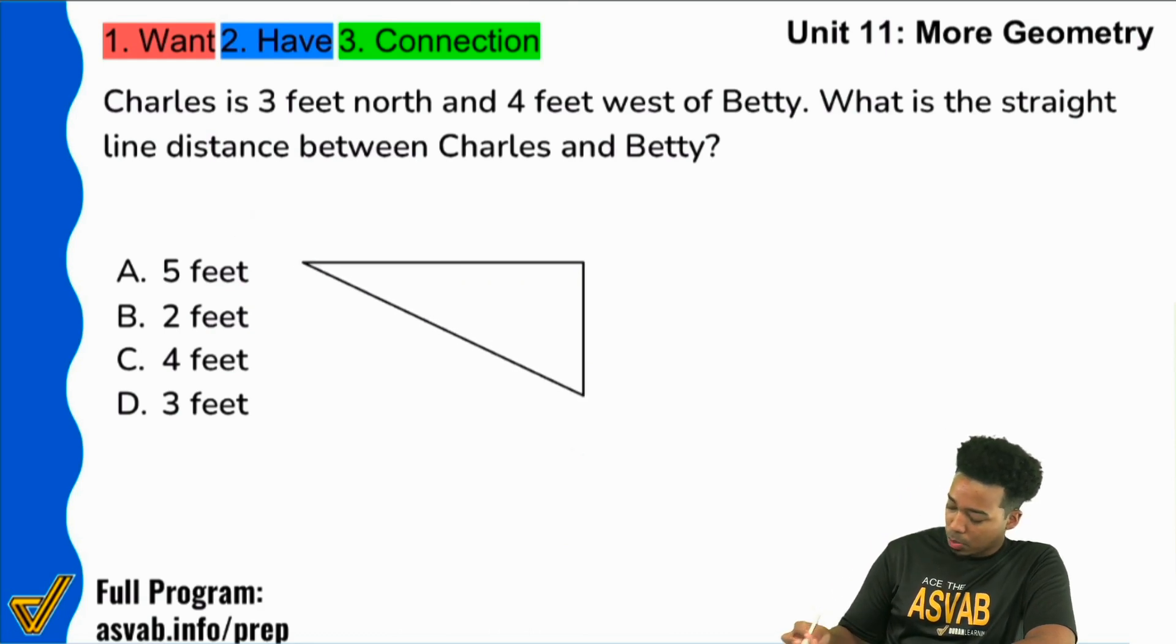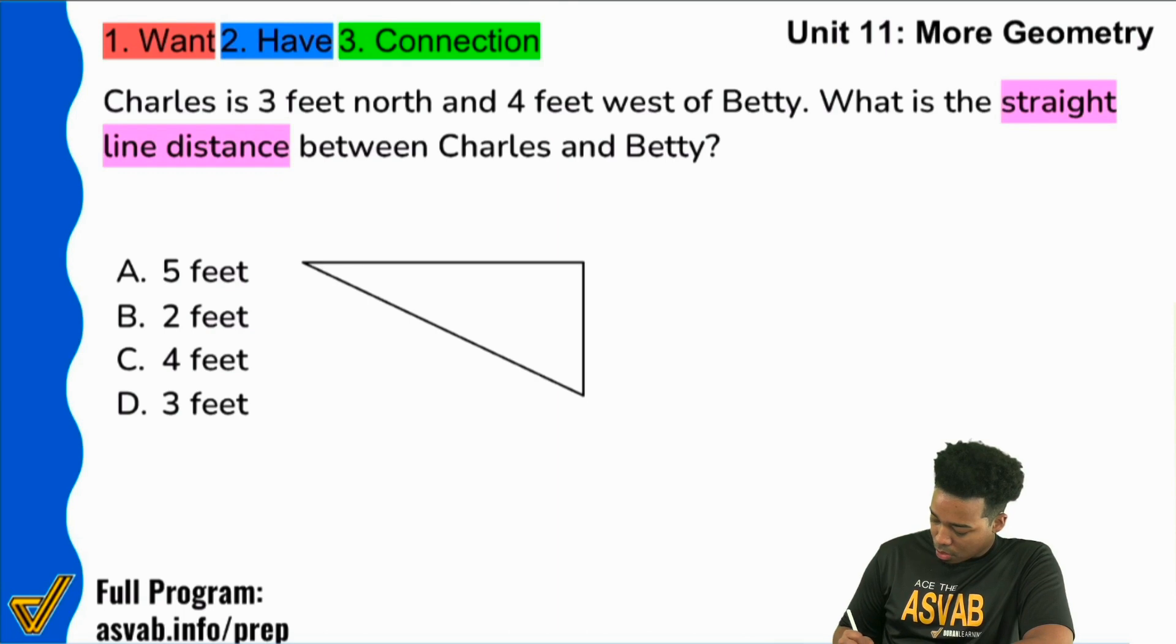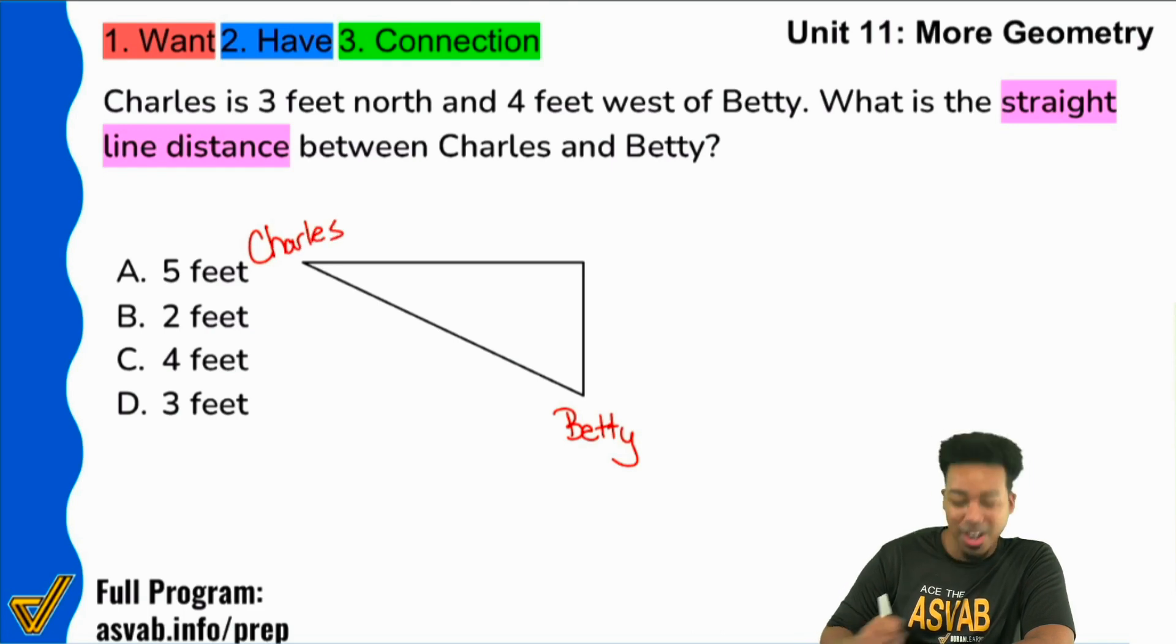So we'll see something to the effect of this, just to make it a little more realistic. So it says, what is the straight line distance between Charles and Betty. So let's go ahead and say that Betty is down here.